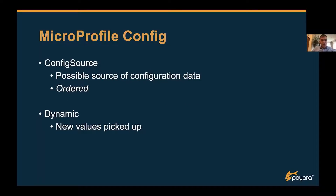A few words on the terminology. The config source within MicroProfile Config is the possible source of configuration data — like a property file or a system variable. They are used in an ordered way, meaning that when your application requests a certain configuration value, it goes through all those configuration sources one by one, and the first one that answers with a valid return value — like a number for a certain property — is the value taken.